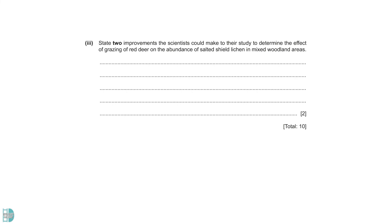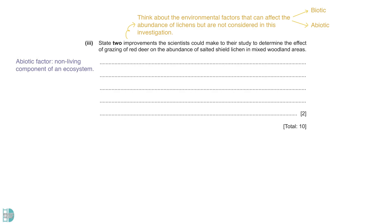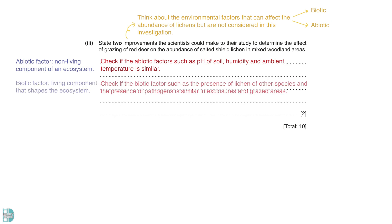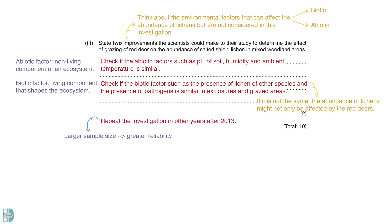State two improvements the scientists could make to determine the effect of grazing of red deer on the abundance of salted-shield lichen in mixed woodland areas. There are many other environmental factors that can affect the abundance of lichens. We can categorise these into abiotic and biotic factors. Abiotic factors are non-living components such as pH of soil, humidity, and ambient temperature — we should check if these are similar for both areas. Biotic factors are living components such as the presence of lichen of other species and pathogens. If these factors differ between areas, the difference in abundance may not be solely due to the grazing of red deer. The scientists should also repeat the investigation in other years after 2013; a larger sample size will increase the reliability of the data.